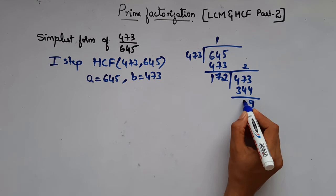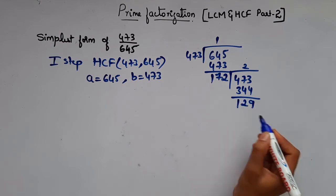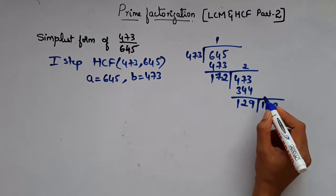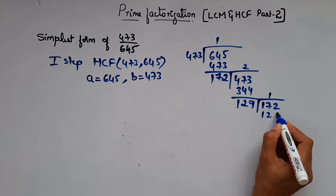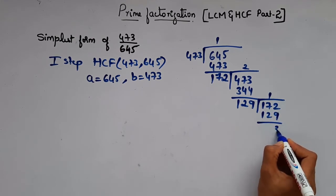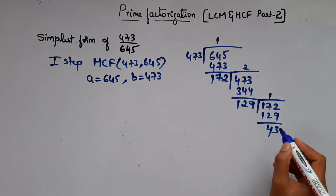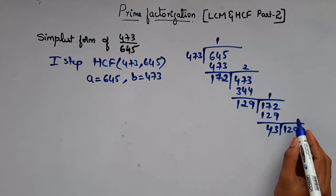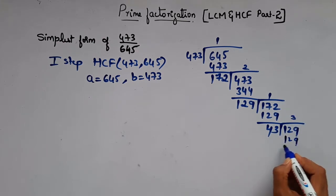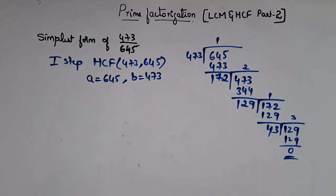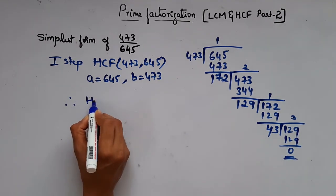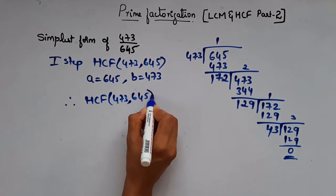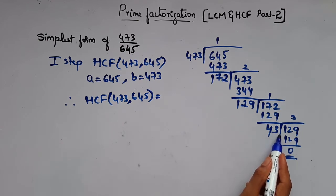129 remainder. Here it is not 0, so again 172 divided by 129, one times 129 leaving 43. Again, 129 divided by 43, three times 43 is 129.